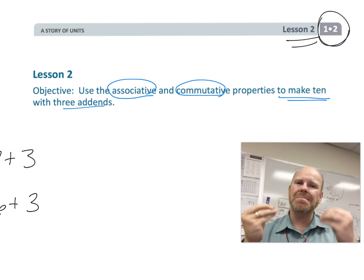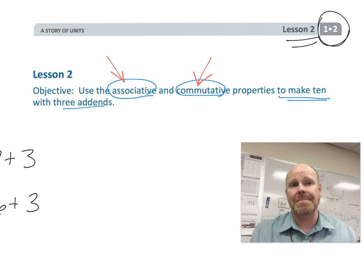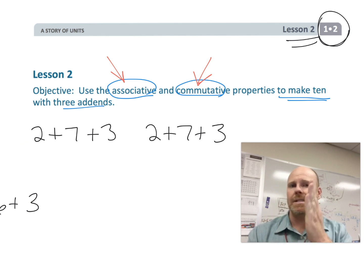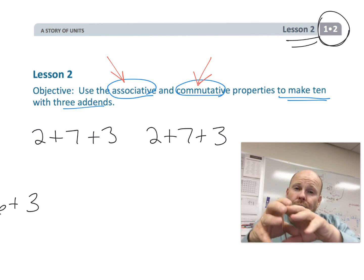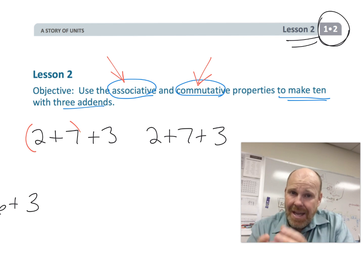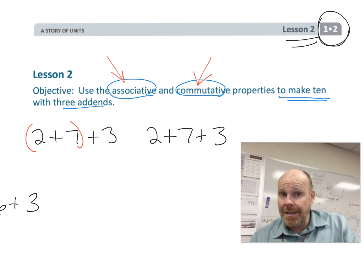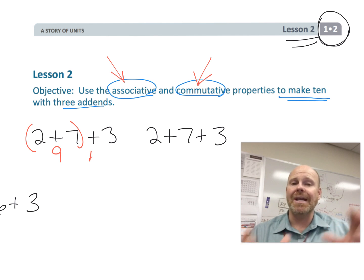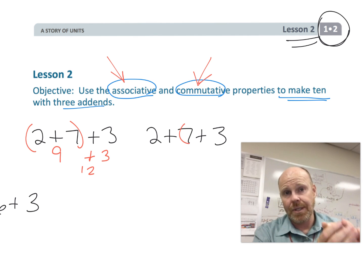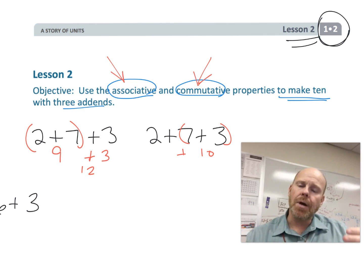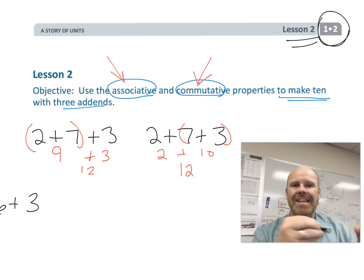Now, when we're specifically mentioning the associative and the commutative property, we need to remember what that means. The associative property means if you have 2 plus 7 plus 3, the associative property allows us to group the 2 plus the 7 together to get 9 plus 3 is 12, or it allows us to group the 7 and the 3 together to get 10 plus 2 is 12. So the associative property allows us to choose how we associate the numbers, knowing that we're still going to get the same answer.